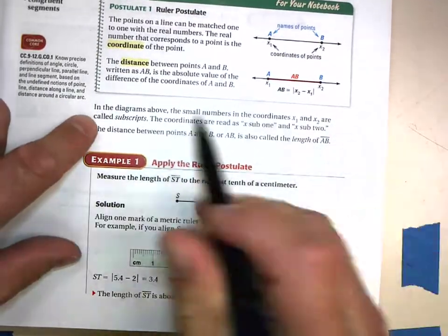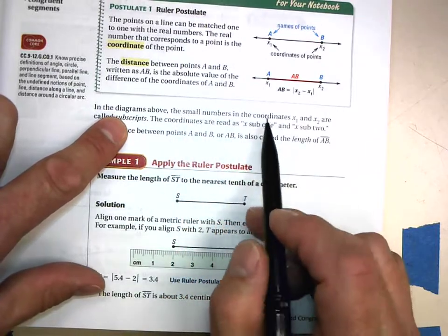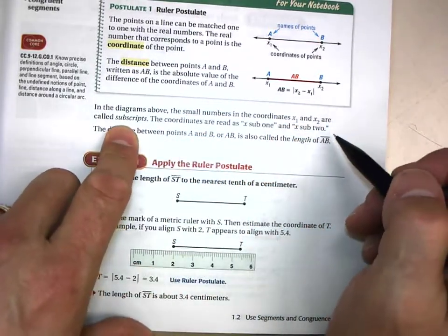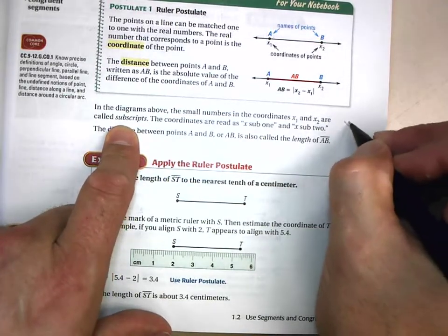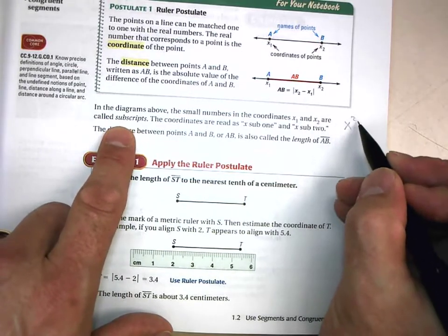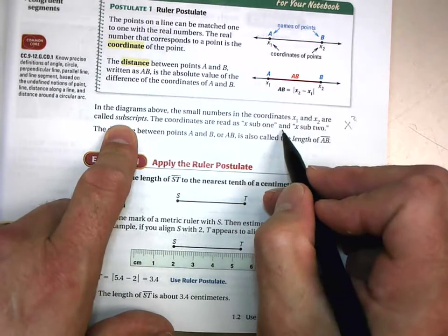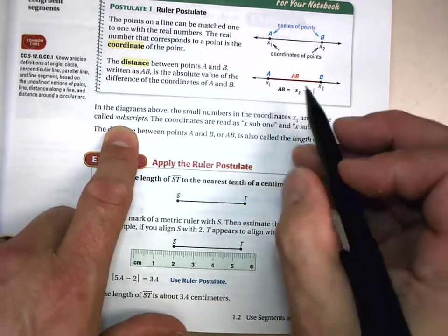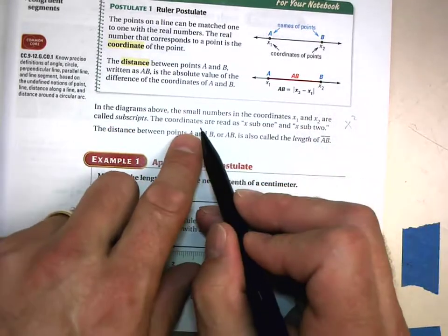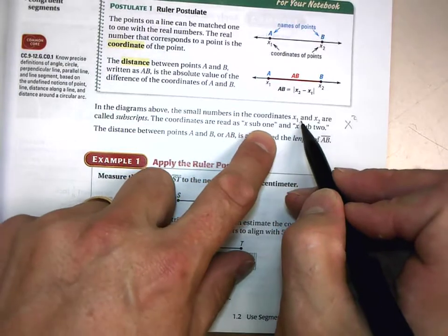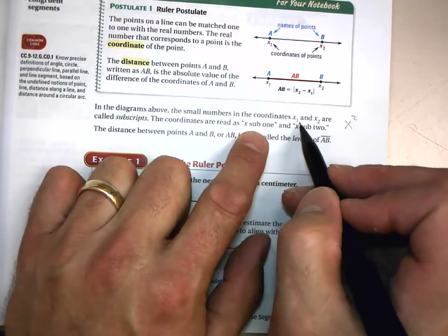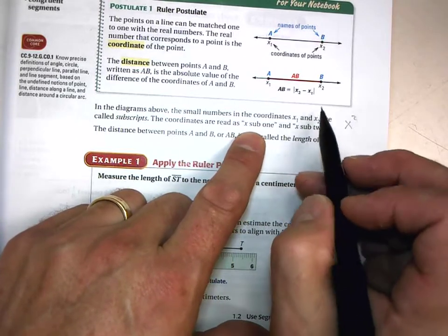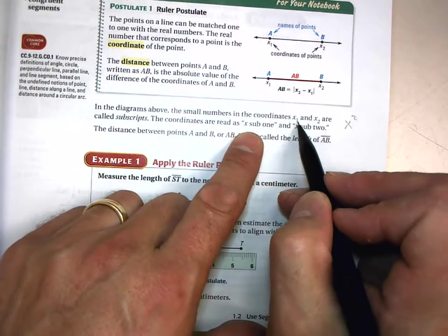In the diagram above, the small numbers in the coordinates X₁ and X₂—those are called subscripts. There's such a word as superscript, like X² (X squared), but when the number or letter is small and below, it's submerged—that is a subscript. The coordinates are read as X sub 1, or X of 1, or X 1.